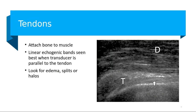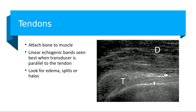Tendons are a little bit more difficult. If you're a general sonographer, you may not have the frequency or the probe that you need to appreciate the detail of the tendons, but you can see that the tendon is like a bunch of bright bands where they're pointing to the arrow. A tendon connects bone to muscle — it's linear echogenic bands that are easier to visualize when the transducer is parallel to the tendon.